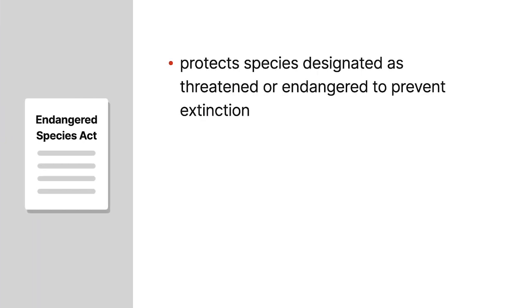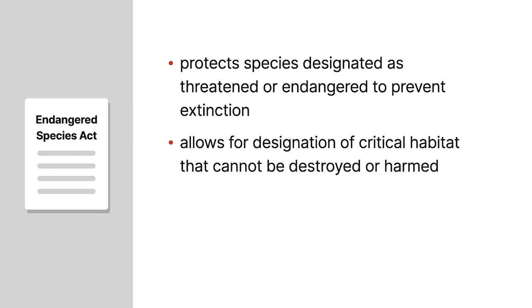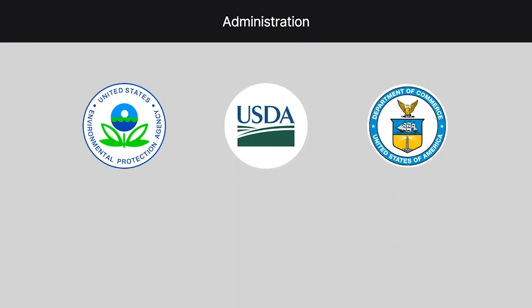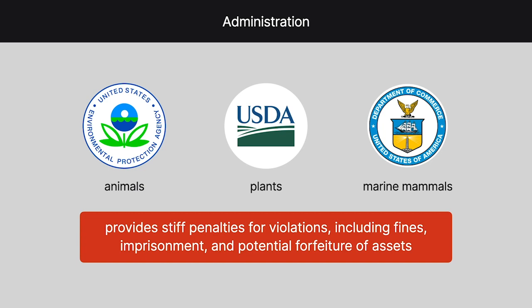The Endangered Species Act protects species designated as threatened or endangered to prevent them from going extinct. It does this in part by allowing for the designation of critical habitat that cannot be destroyed or harmed by human activities such as land development. It affects development areas where endangered species have been identified and frequently overlaps with state and local regulations. Administration is split: the EPA handles animals, USDA handles plants, and the Department of Commerce handles marine mammals. It provides stiff penalties for violations, including fines, imprisonment, and potential forfeiture of assets. Over 200 species have been protected from going extinct via the Act, often known as the ESA.